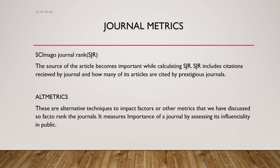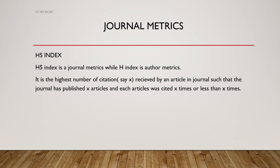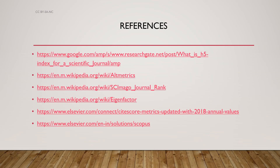AltMetrics are alternative techniques, other than the impact factor or other metrics discussed so far, to rank journals. It measures the importance of a journal by assessing its influential reality in public — in other words, its popularity — and on the basis of that popularity it assesses its influentiality. H5 Index is a journal metric. It is the highest number of citations X received by articles in a journal such that the journal has published X articles and each article was cited X times or fewer.